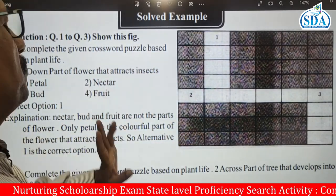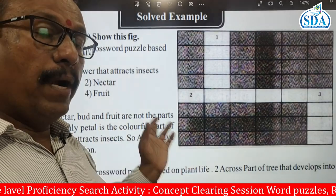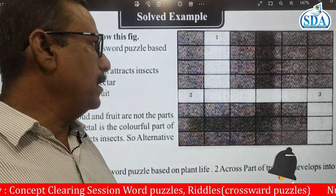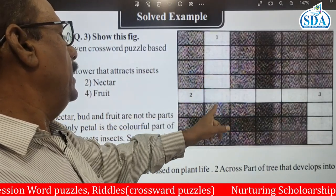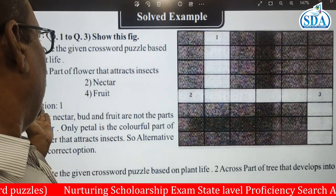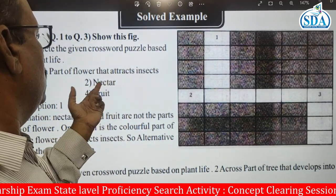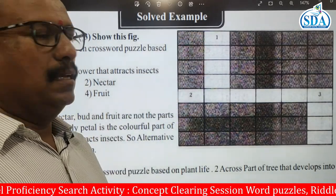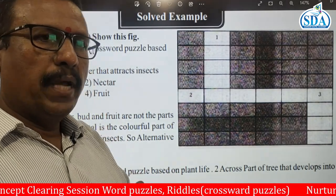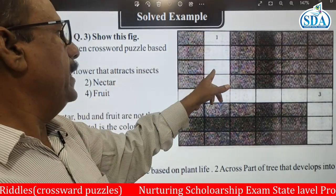The options are: petal, nectar, bird, and fruit. From biology, you should know that the attractive, colorful part of a plant is nothing but the petal — P-E-T-A-L. Nectar is N-E-C-T-A-R, which has six letters and doesn't fit. You have to focus on five-letter words, so it may be petal or fruit. The attractive down part of the plant is the petal. So the answer is P-E-T-A-L.